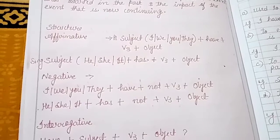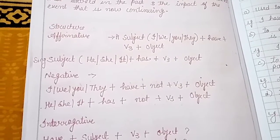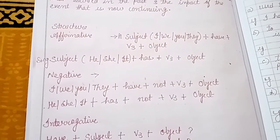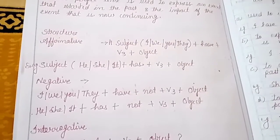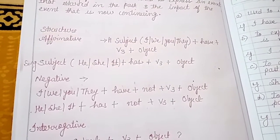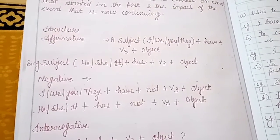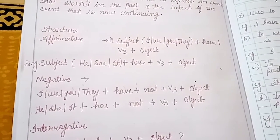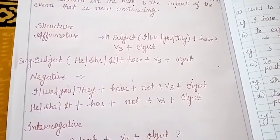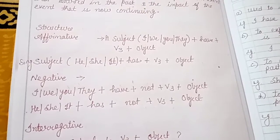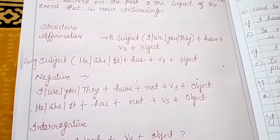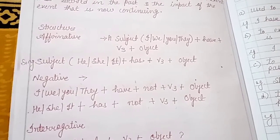Second, for a singular subject — any singular subject, which may be a name of a person, or he, she, or it — the structure is: subject plus 'has' plus verb third form plus object.